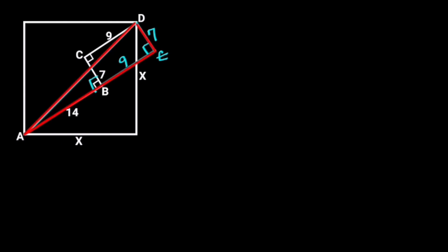Next, let's consider triangle ADE. Notice that triangle ADE is a right triangle with AE equal to AB plus BE. AB is 14 units, and BE is 9 units.